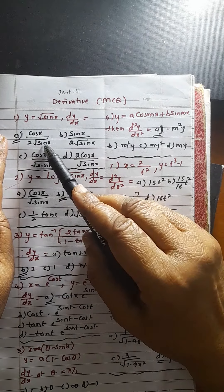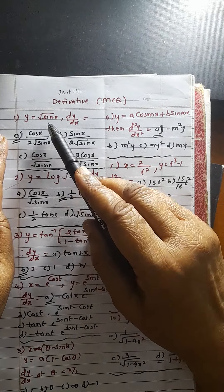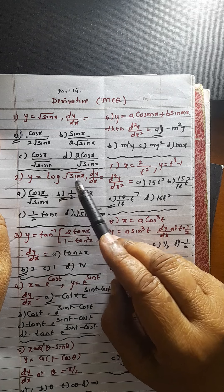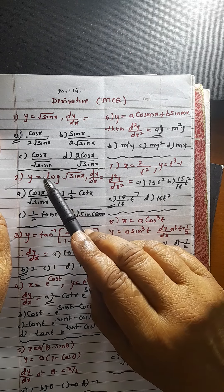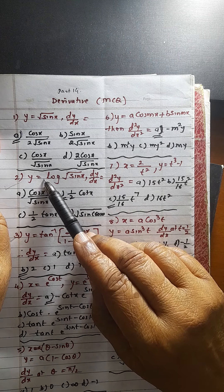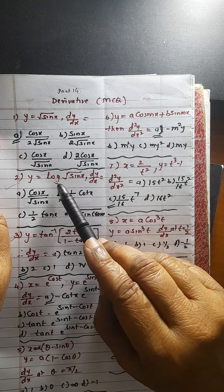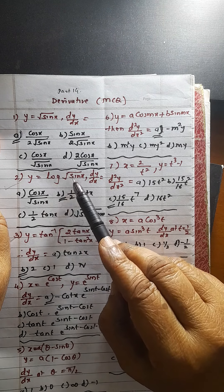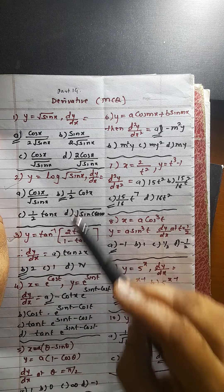Derivative of root of anything is 1 upon 2 root into derivative of the function. You will get this answer. Don't do it like this. This raise to half. Half you take outside by theorem on logarithm. So half log of sin x. So derivative of log of sin x is 1 upon sin x into cos x. So you will get this answer.